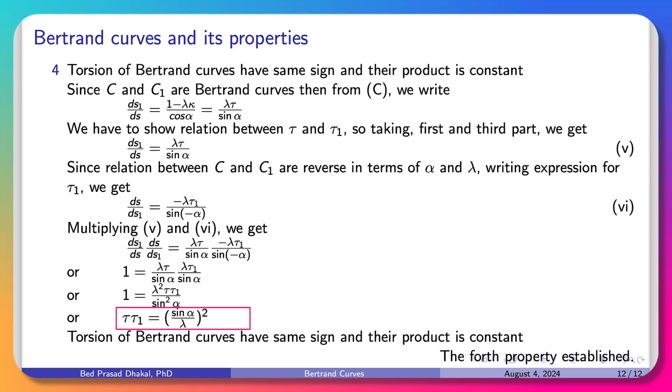α is also constant, λ is also constant, so the right side is also constant. This shows torsions of Bertrand curves have same sign and their product is constant, which is now proved. Thank you.